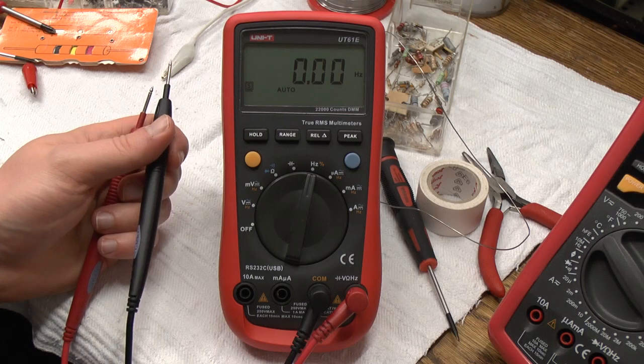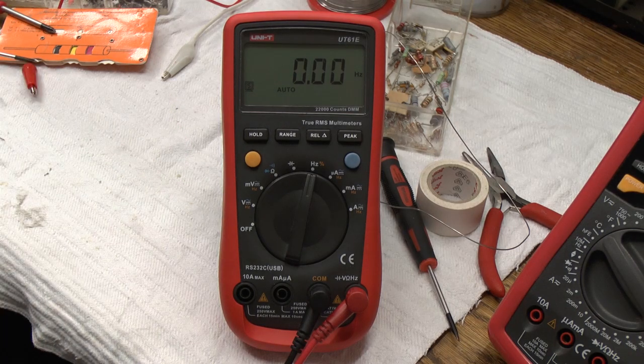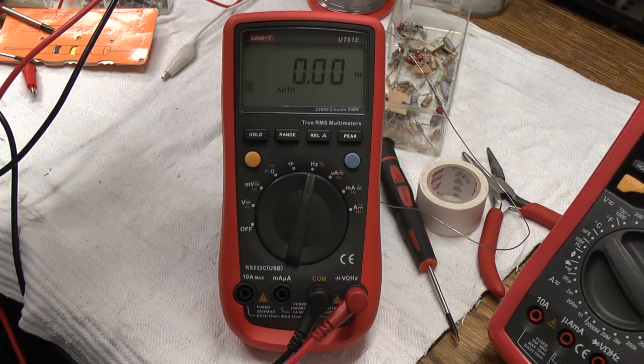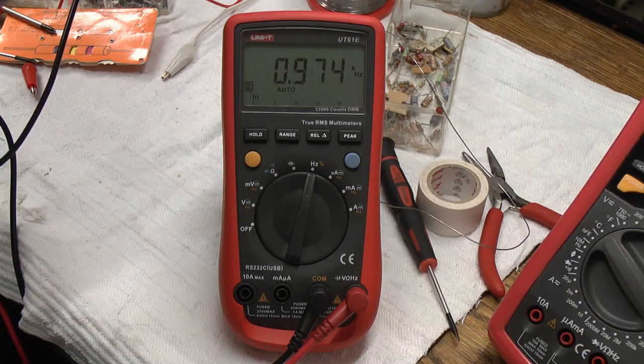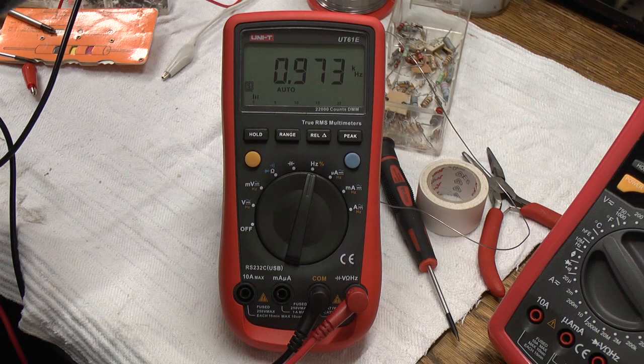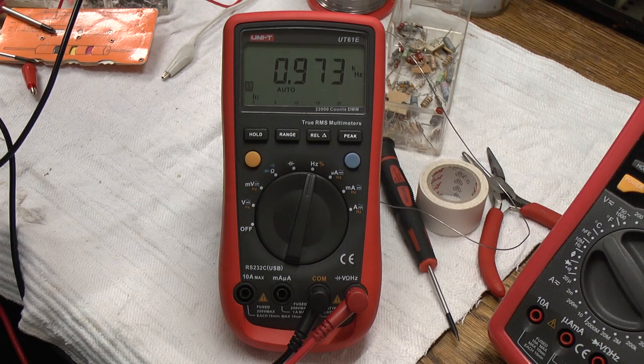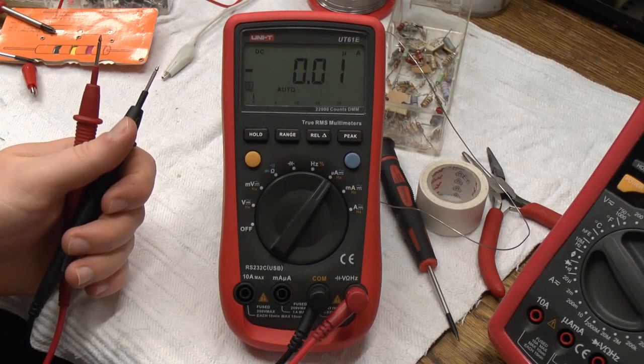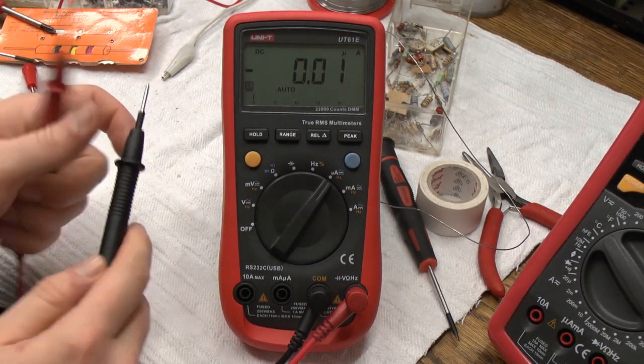For some reason, it then does a reset. The frequency mode does work. I still have the function generator going up here. And as you can see, we still have almost a kilohertz in frequency on there. The microamp range, I cannot test that, but it does seem to work.